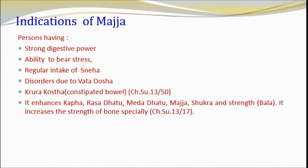Vasa is useful for increasing virility and semen and is valuable for unction and those involved in physical exercise. Indication of Majja: persons having strong digestive power, ability to bear stress, regular intake of Sneha, disorders due to Vata Dosha, and those having Krura Kosha (hard bowel). Majja enhances Kapha, Rasa Dhatu, Medha Dhatu, Majja, Shukra and strength, and increases the strength of bone specifically. Fat and marrow should be taken during spring, and one should not take any oleaginous substances during extreme heat and cold.